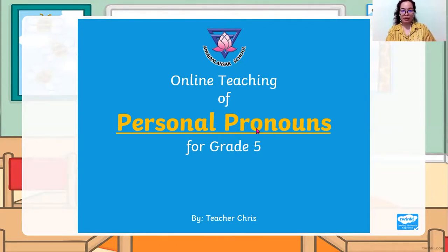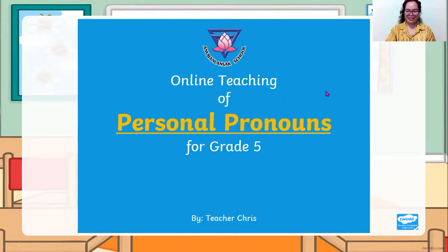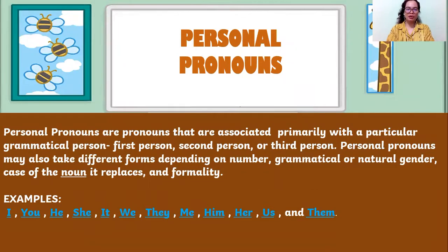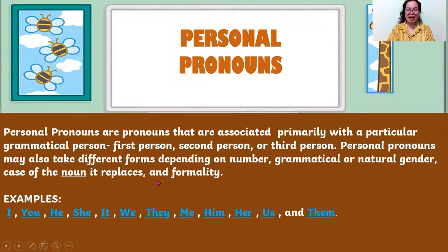So pronouns are correlated with your nouns, and we will find out more about that later. So what is a personal pronoun? Personal pronouns are pronouns that are associated primarily with a particular grammatical person — first person, second person, or third person. Personal pronouns may also take different forms depending on number, grammatical or natural gender, case of the noun it replaces, and formality.